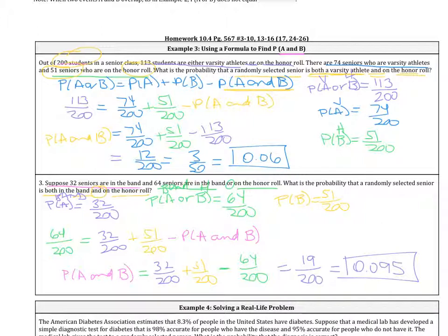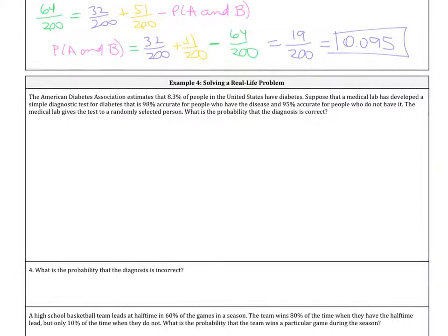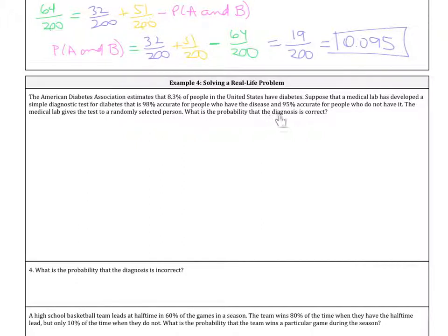Now let's look at our last example, solving a real-life problem. The American Diabetes Association estimates that 8.3% of people in the United States have diabetes. A medical lab has developed a simple diagnostic test that is 98% accurate for people who have the disease and 95% accurate for people who do not have it. The test is given to a randomly selected person — what is the probability that the diagnosis is correct?